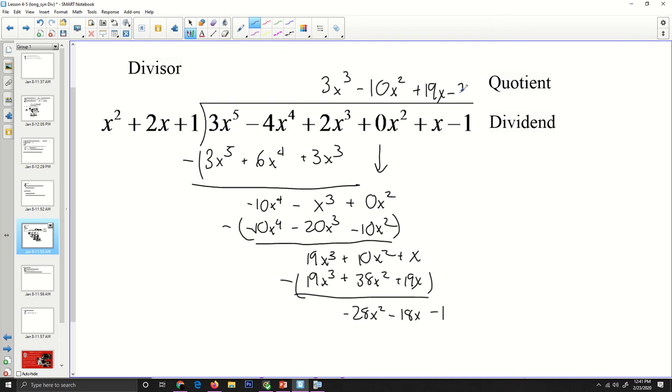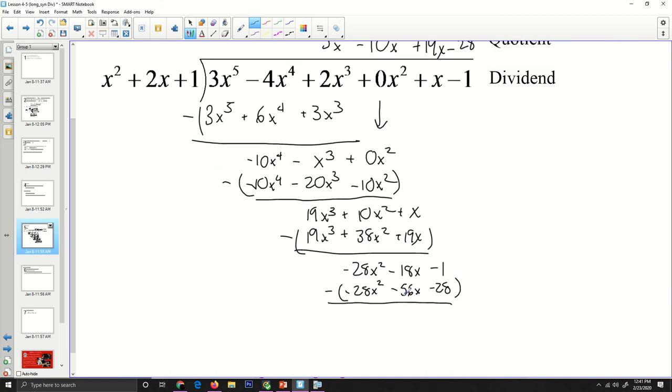I ask myself, what times x squared is 19x to the 3rd? Well, 19x is. 19x times x squared is 19x to the 3rd. 19x times 2 is 38x squared. 19x times 1 is just 19x. Again, we are subtracting that away. Those first two terms cancel. I've got negative 28x squared, and then I subtract these two. That'll give me negative 18x. Then, I bring down my negative 1. I'll have to multiply by negative 28. That'll give me negative 28x squared. That'll give me negative 56x and then negative 28. When I subtract that away, these first two cancel, and this one becomes positive. I'll have positive 38x and then positive 27. Since this is a linear expression, I know that I am finished.